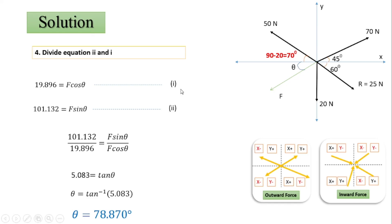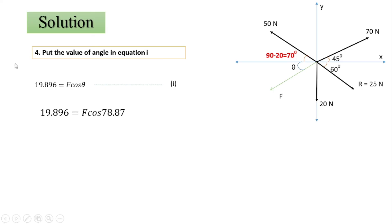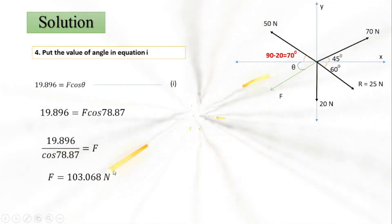After calculating θ, we find the magnitude F by substituting θ into Equation 1: F equals 19.896 divided by cos(78.87°), giving F equals 103.09 newton. The positive sign of the force indicates that the assumed location of force F in the third quadrant is correct.